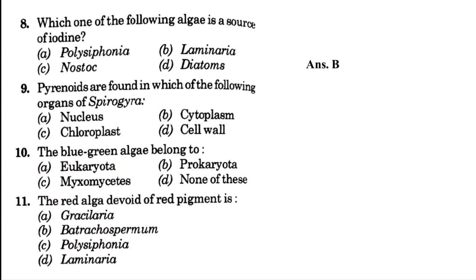Pyrenoids are found in which of the following organs of Spirogyra? Nucleus, cytoplasm, chloroplast, or cell wall — it is found in chloroplast. Then, the blue-green algae belong to — blank: eukaryote, prokaryote, Myxomycetes, or none of these. The answer is B, that is prokaryotes.